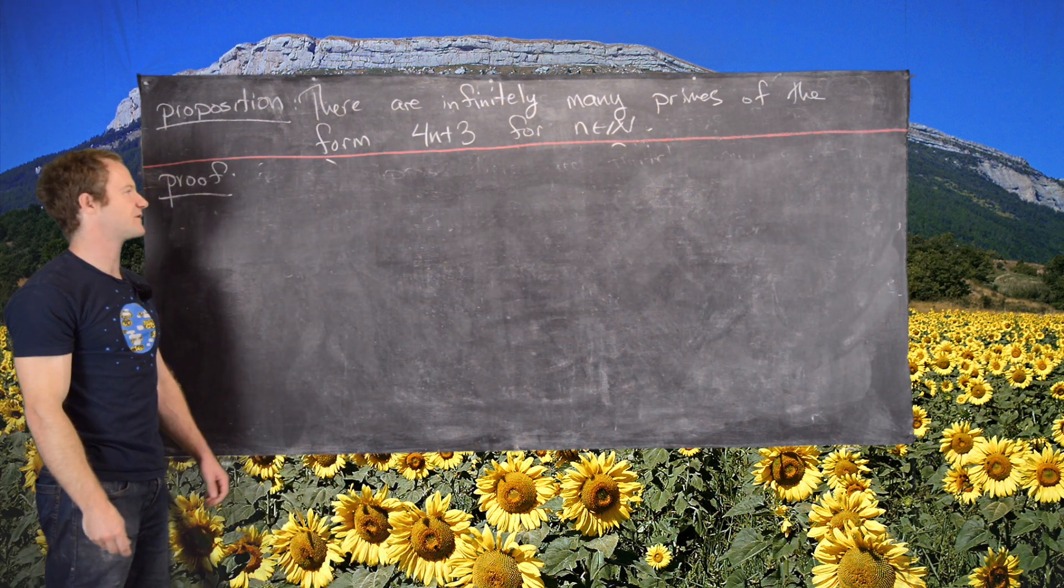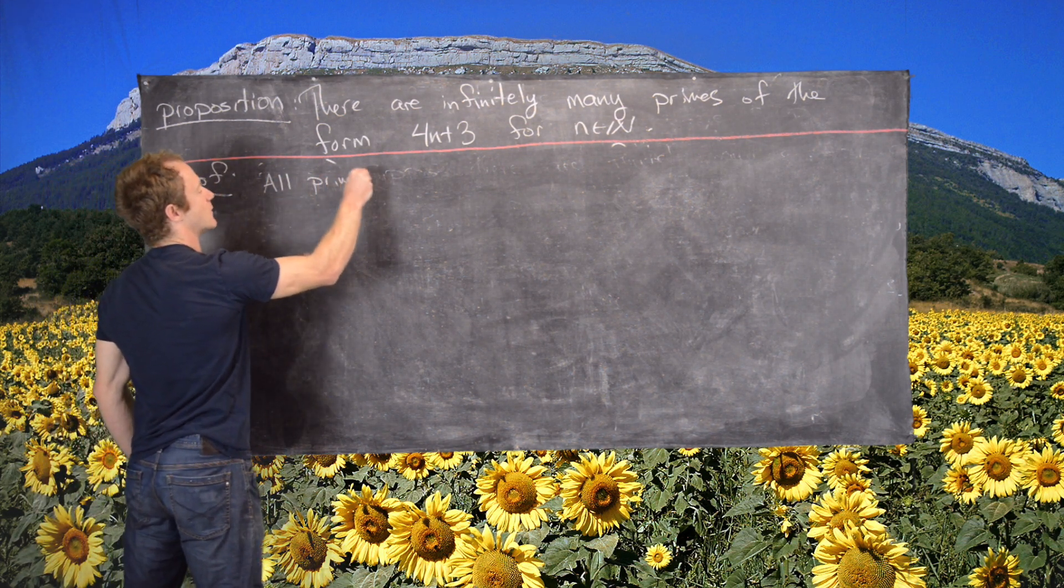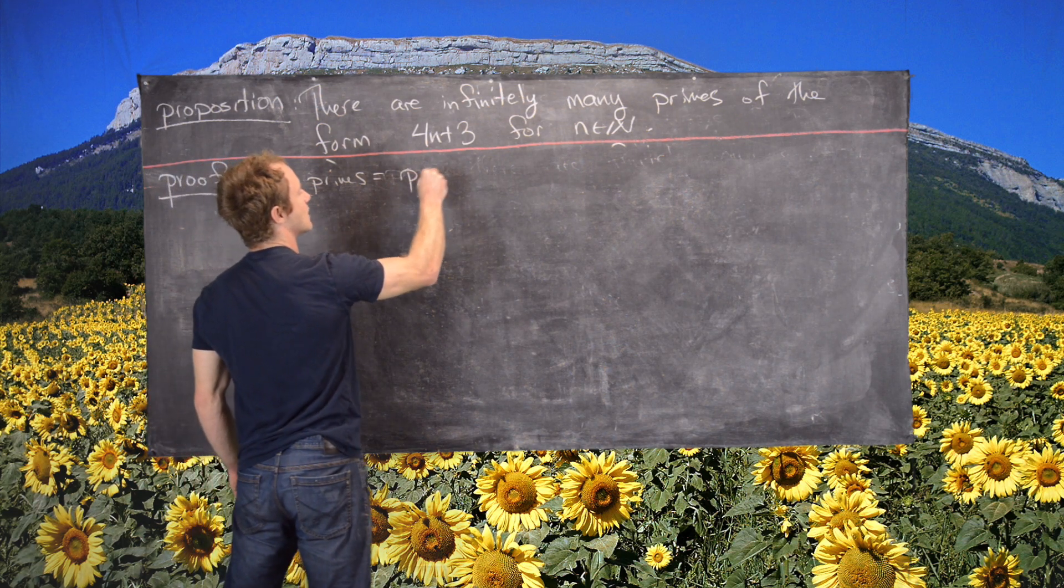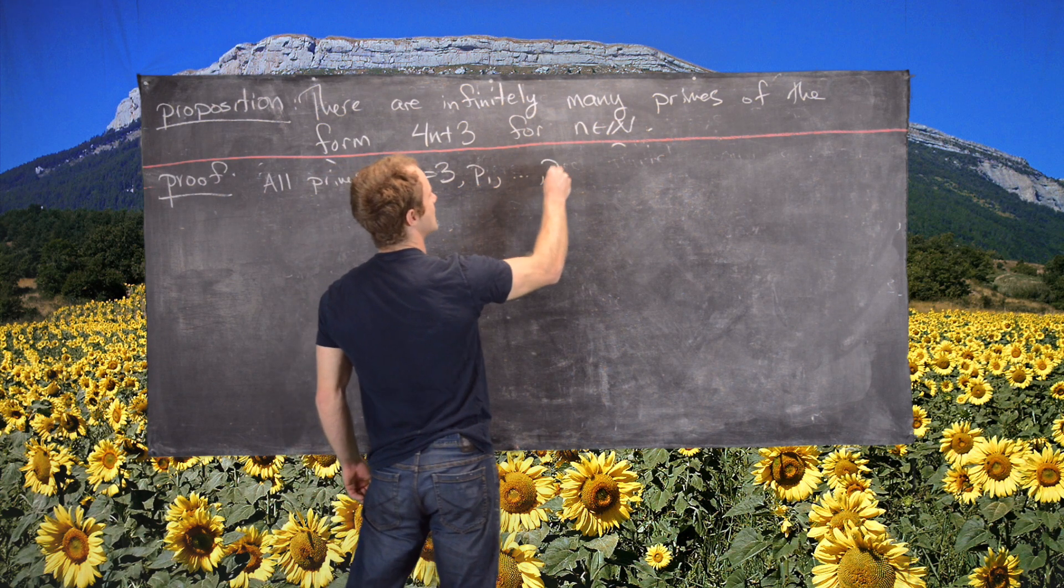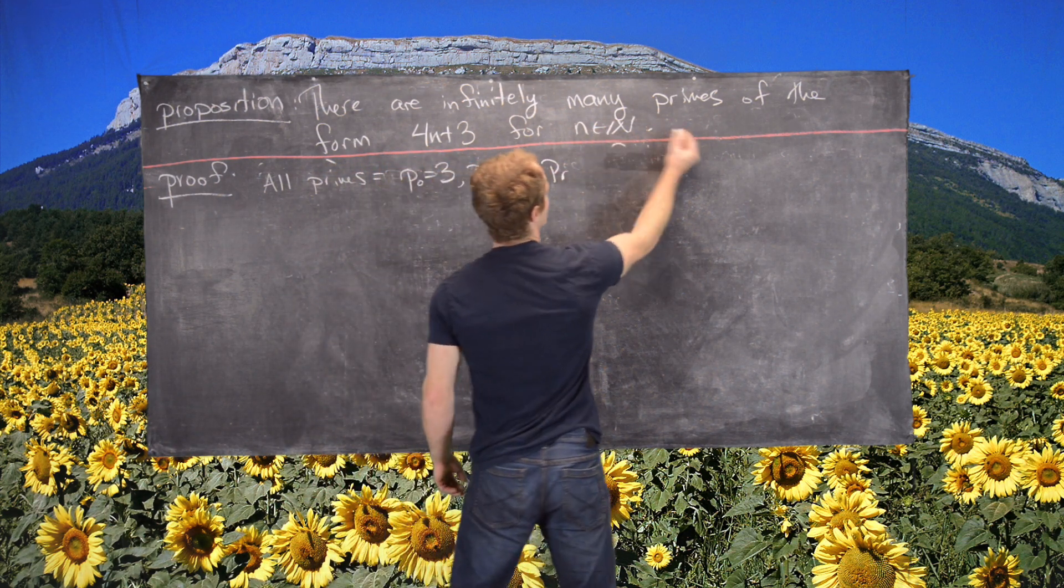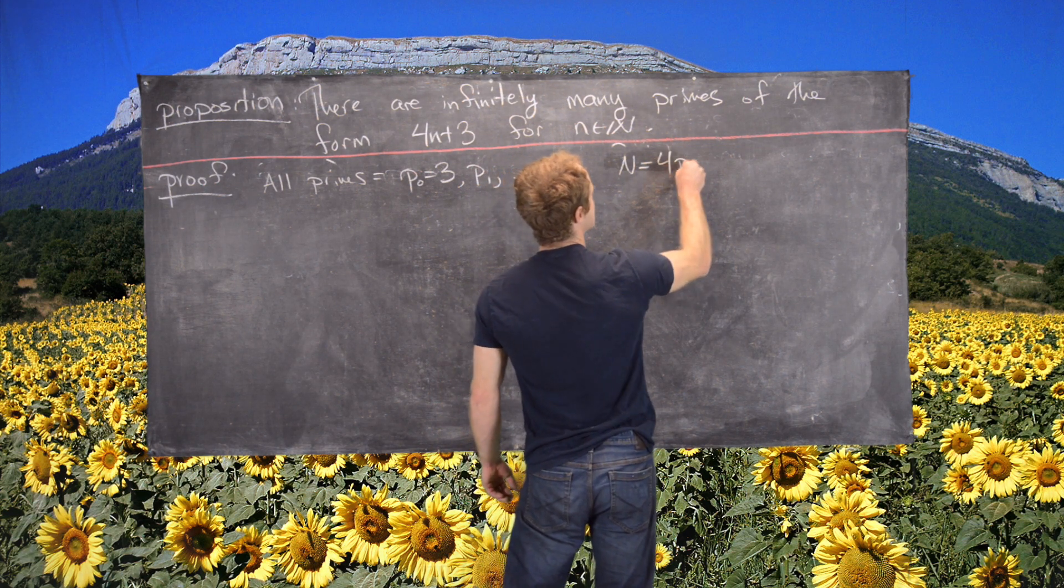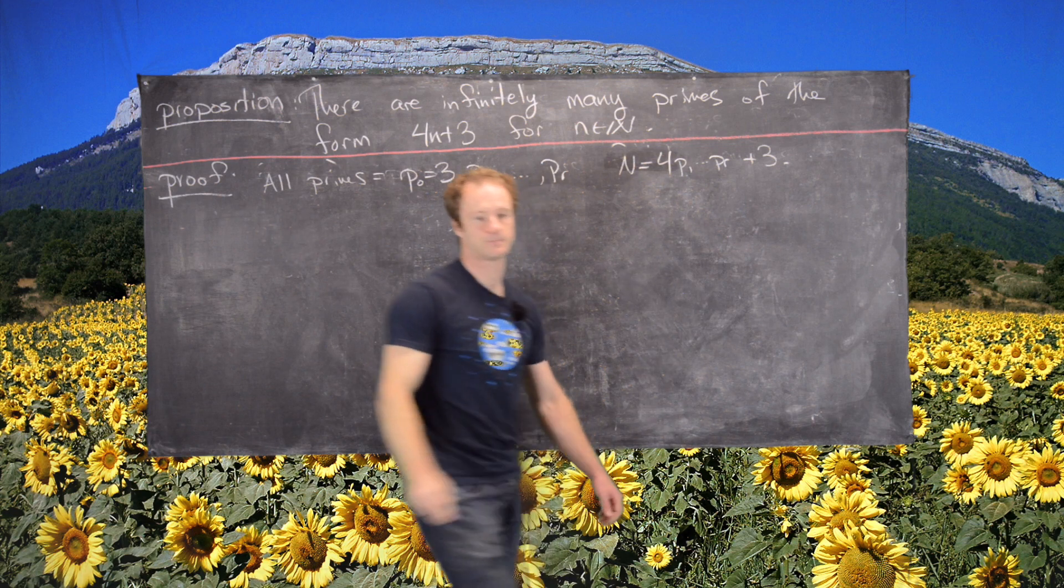So now we'll finish off this proof. Let's just recall that we said that all primes of this form were on the list P0, which is 3, P1 up to PR, and we were considering this number n, which equals 4 times P1 up to PR plus 3.